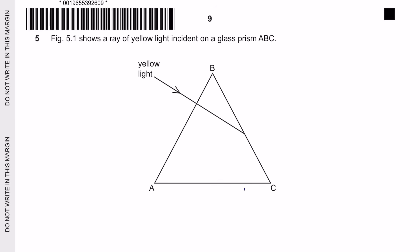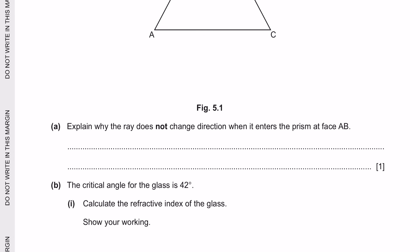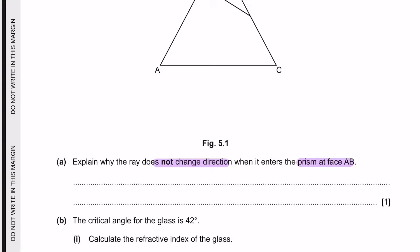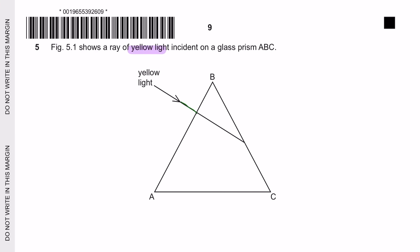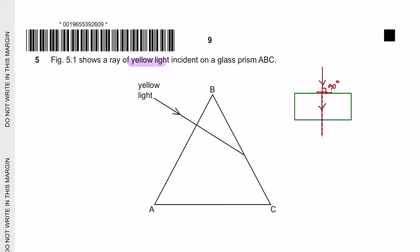Question 5. Figure 5.1 shows a ray of yellow light incident on a glass prism ABC. Question A: Explain why the ray does not change direction when it enters the prism at face AB. When a ray of light strikes a boundary at 90°, it continues in a straight line without changing direction.